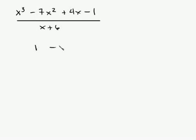So you're going to have 1, negative 7, 4, and negative 1. And you're going to divide by, change the sign of the constant of the divisor to negative 6. So if this had been x minus 6, this would be a positive 6. So now what we're going to do is set this up.